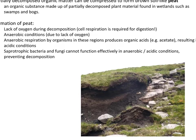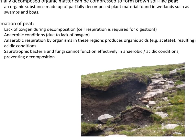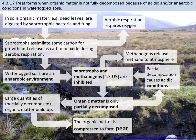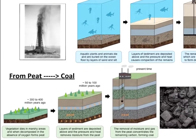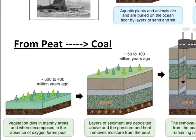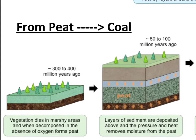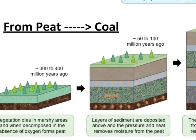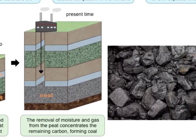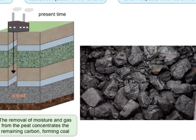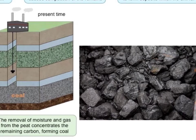Peat can be harvested, dried, and burned, but it is not renewable. If peat is left over millions of years, it will become coal. Since the organic matter is not fully decomposed in waterlogged soils, carbon-rich molecules remain and form peat. When deposits of peat are compressed under sediments, heat and pressure force out impurities and remove all moisture. The remaining material has a high carbon concentration and undergoes chemical transformation to produce coal.